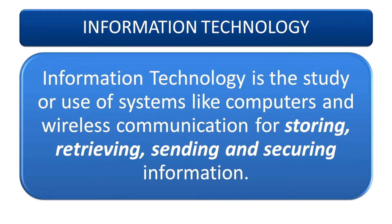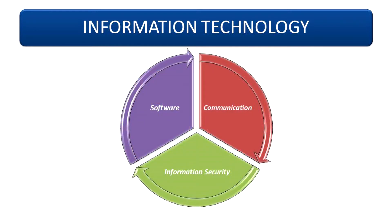If we define information technology in simple words, IT education branch is related to the technology of information processing, storing, sending, securing, and retrieving information with gadgets like computers and wireless communication. It's a significant technology of the present era. The three essential functions of information technology are software, information security, and networking, and all subjects are included as subdivisions of these three sections only.